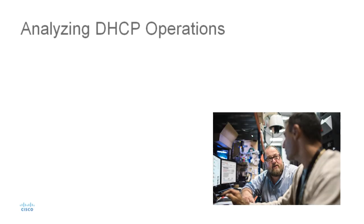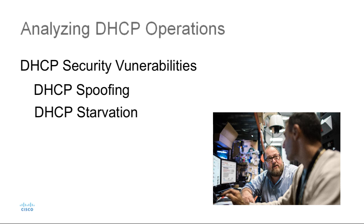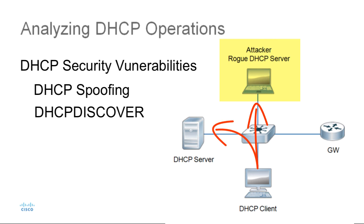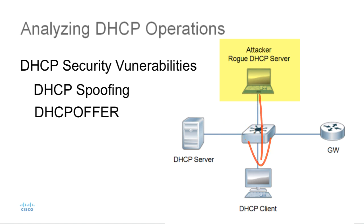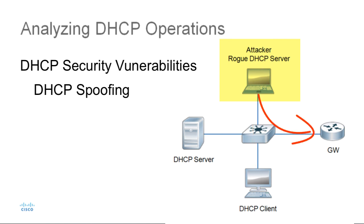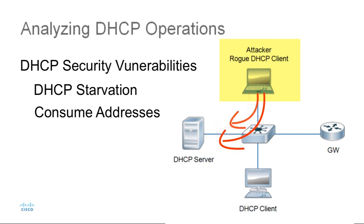Now that we have a better idea of how DHCP works, we need to understand some DHCP security vulnerabilities. These include DHCP spoofing and DHCP starvation. In DHCP spoofing, the attacker inserts a rogue DHCP server into a network. When a client sends out a DHCP discovery packet, the rogue server responds with a DHCP offer before a valid server can. The rogue server hands out an invalid IP address and designates itself as the default gateway, directing all traffic through it so the attacker can sniff packets — a man-in-the-middle attack. With DHCP starvation, the attacker uses a rogue DHCP client to broadcast discovery requests with spoofed MAC addresses. If enough rogue requests are sent, the attacker can consume all valid IP addresses from a production DHCP server, causing a denial-of-service attack.